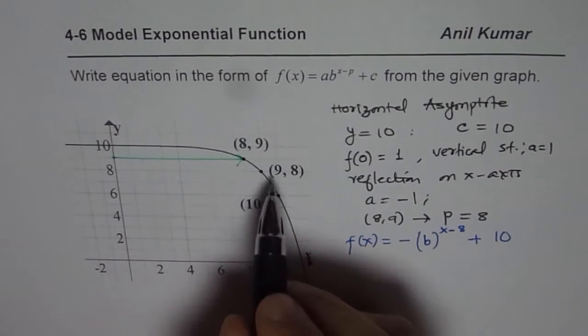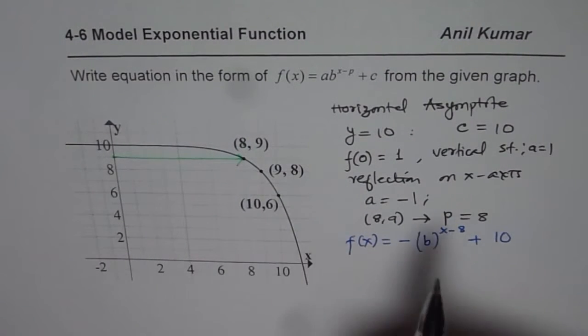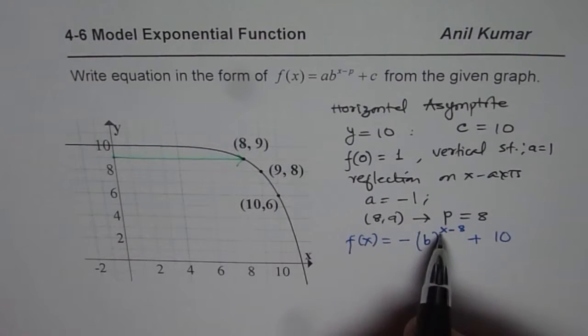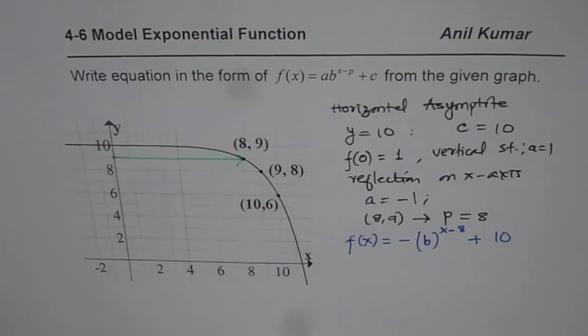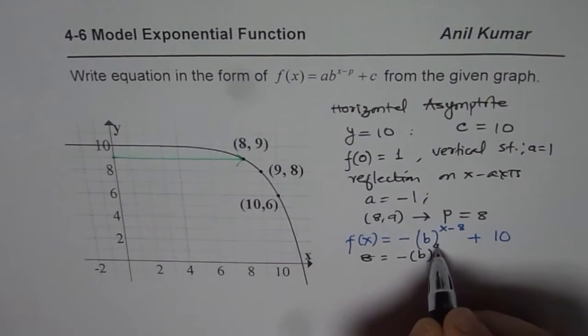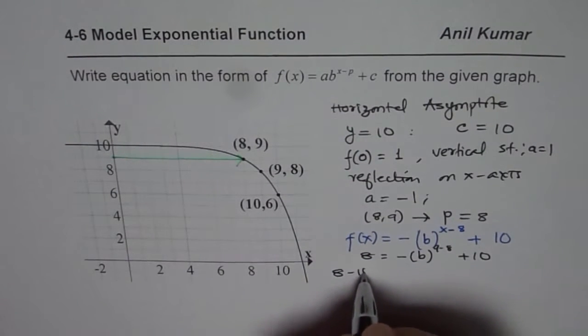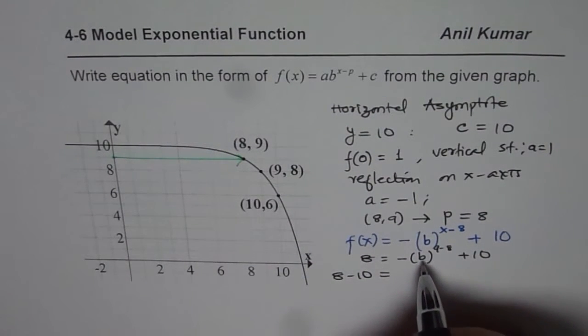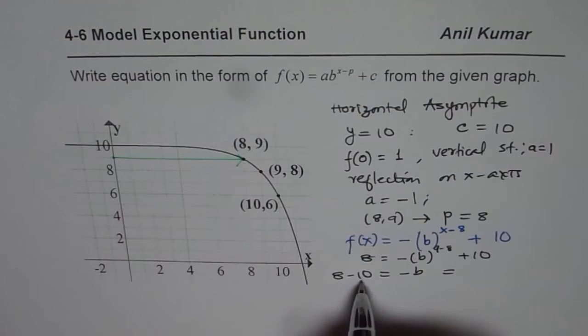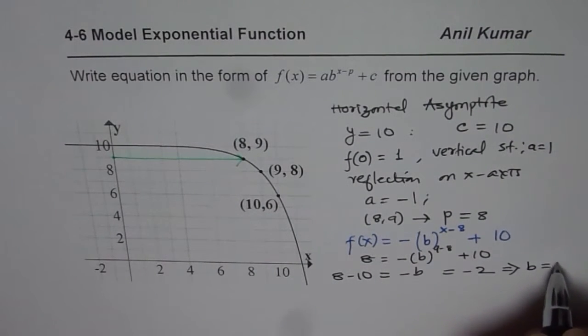Now to find the base, we can use one of these points. So we can use the point (9, 8). So if I use point (9, 8), 9 is the x value, 8 is the y value. So what I get here is 8 equals to minus b to the power of 9 minus 8 plus 10. Bringing 10 to the left side, we get 8 minus 10 equals to minus b. 9 minus 8 is 1. Which is 8 minus 10 is minus 2. And therefore, we get b equals to 2.